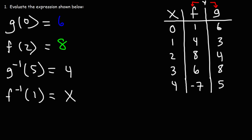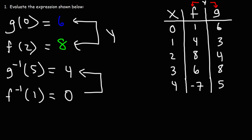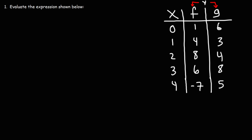So remember this: when evaluating regular functions you're looking for the y value. When evaluating inverse functions, you're looking for the x value. So the inverse of f of 1 is 0. The inverse of g of 5 is 4. Now that we know how to do that, let's work on some harder problems.